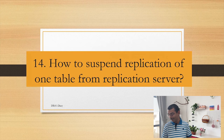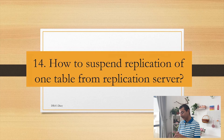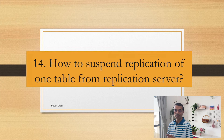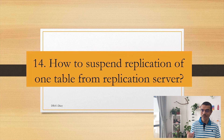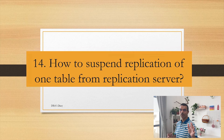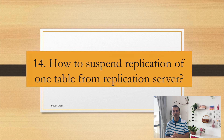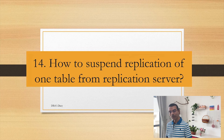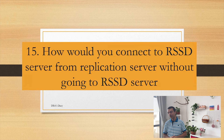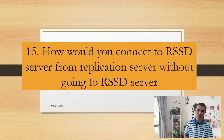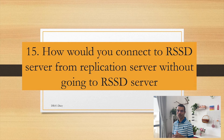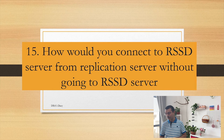How to suspend replication of one table from replication server? The previous question asked how to suspend replication for all tables in one database. This next question is: how to suspend replication of only one table? The remaining tables will keep replicating; however, you want to stop one specific table from replication. This will be in the context of one database. Also: how would you connect to RSST server from replication server without going to RSST? There is a command you can use to connect to RSST directly from replication server without needing to log into RSST separately.